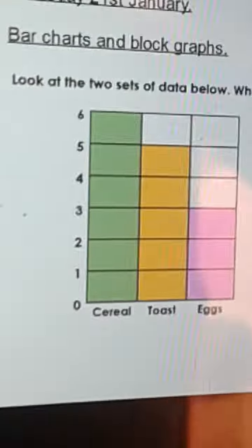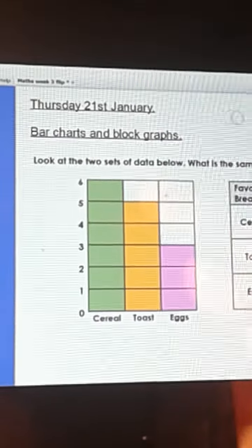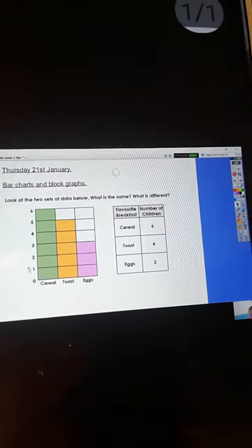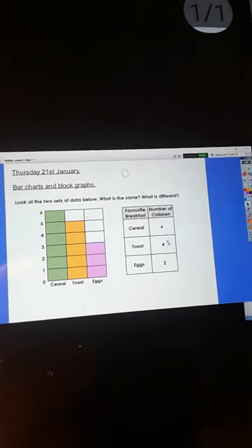Okay, so I can say that the cereals are the same. Toast is different. There are more children down for toast on the graph than there are in the actual data. For eggs, there are more children for eggs on the graph than there are in the actual data. Now whoever's doing this has not read the data properly.